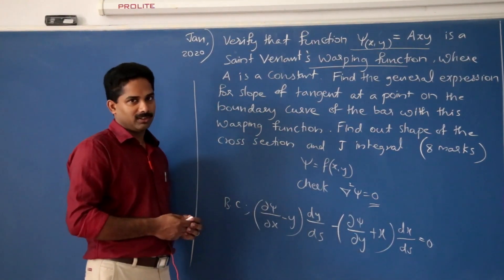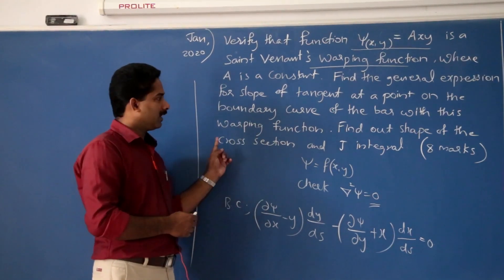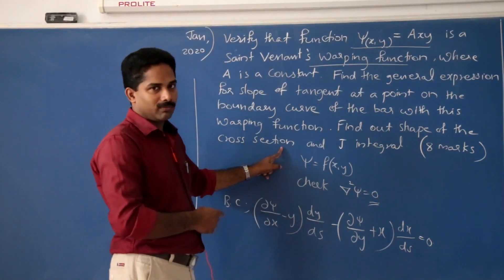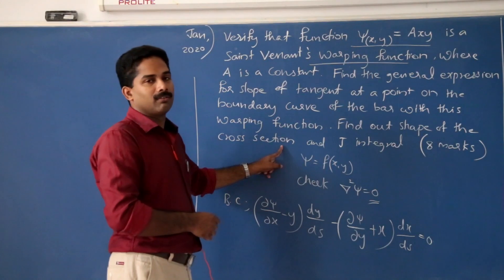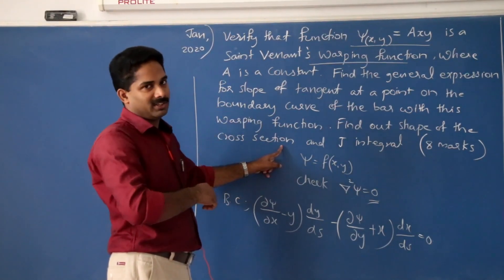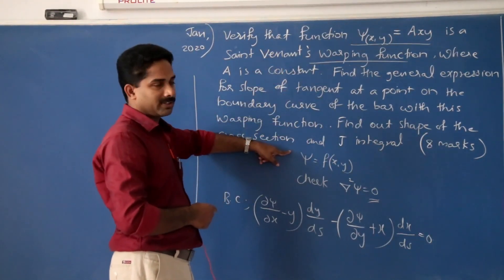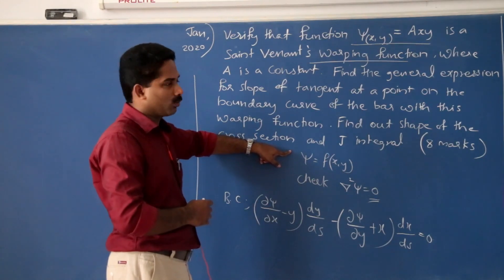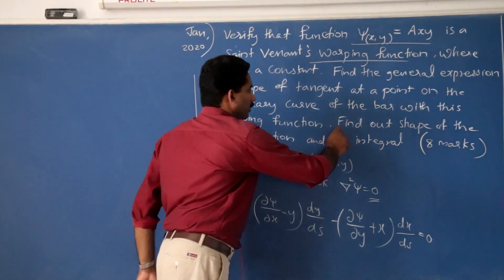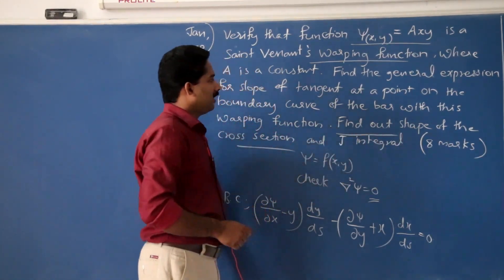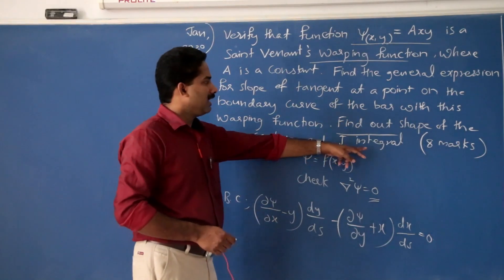This is of the form x²/a² + y²/b² = 1. So the shape of the cross section is elliptical. This is the elliptical cross section derivation.